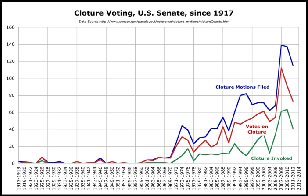Cloture is French for the act of terminating something. It was introduced into the Parliament of the United Kingdom by William Ewart Gladstone to overcome the obstructionism of the Irish Parliamentary Party and was made permanent in 1887. It was subsequently adopted by the United States Senate and other legislatures.